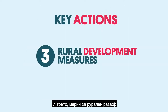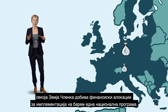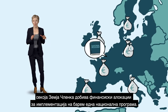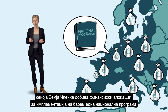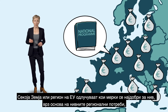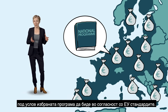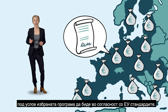And thirdly, rural development measures. Each member state receives a financial allocation to implement at least one national programme. Each EU country and region can decide which measures are best based on their regional needs, under the condition that the chosen programme falls in line with EU standards.